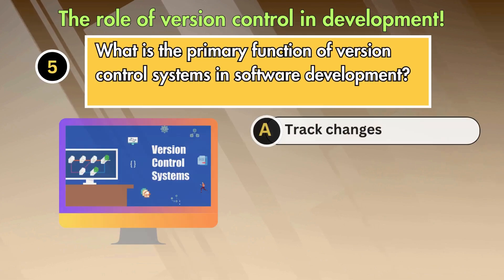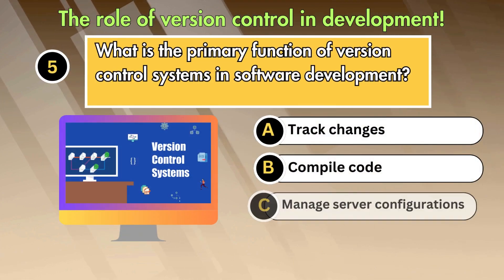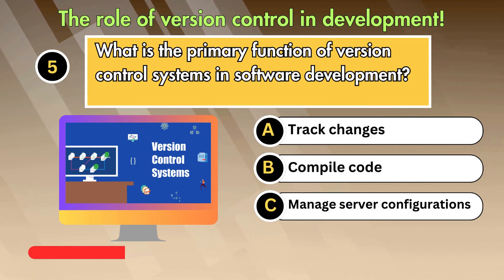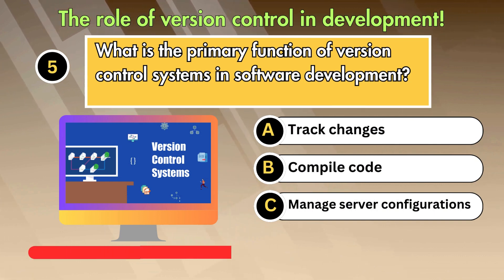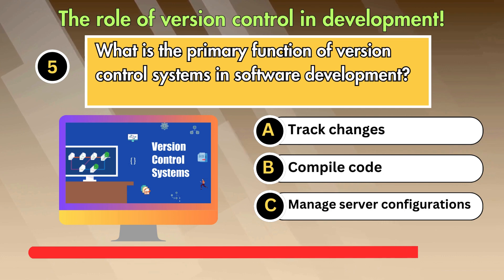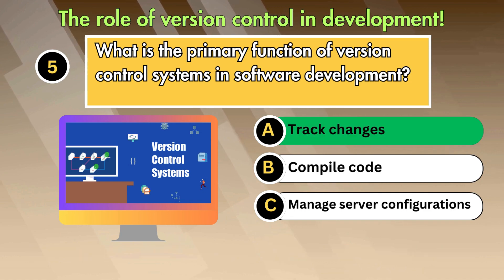What is the primary function of version control systems in software development? Option 1: Track changes. Option 2: Compile code. Option 3: Manage server configurations. Answer is Track changes.